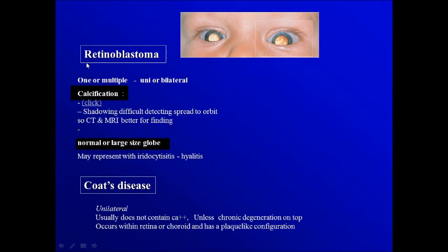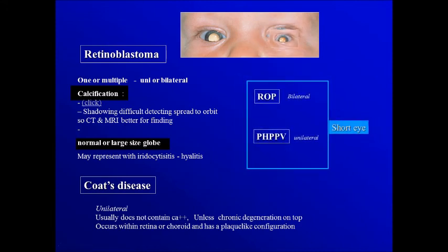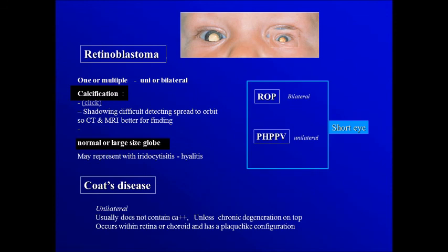Another important characteristic of retinoblastoma is that the eye globe is of normal or large size. This is important to differentiate it from other conditions that produce a similar lesion occurring in short eyes: retinopathy of prematurity and persistent hyperplastic primary vitreous. Retinopathy of prematurity is commonly bilateral, while persistent hyperplastic primary vitreous is unilateral.